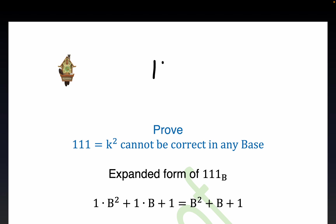Today we're trying to show that the digits 111 cannot be a perfect square in any base. Now the most common example of this is in our everyday base 10. 111 is not a perfect square.